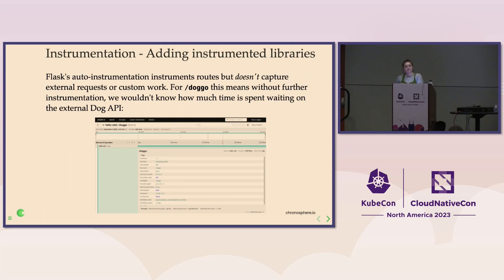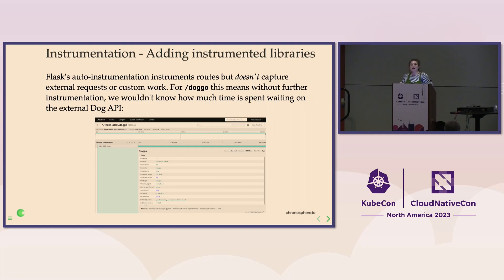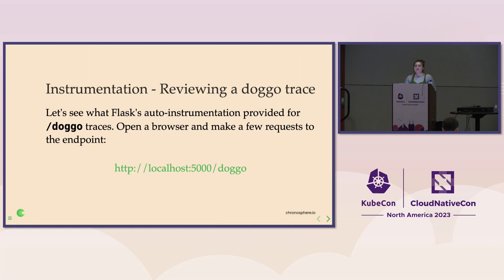Flask auto instrumentation was instrumenting at the route level, but it didn't capture external requests or custom work. Our Doggo endpoint calls out to the custom Dog API — we don't control that code, so we can't add instrumentation there. That means if we only have Flask programmatic instrumentation and we're looking at traces for Doggo, we don't really know how much time we spent calling out to the Doggo API versus spending internally processing. It would be super handy to know if it was a Doggo API problem or an internal problem if we needed to optimize this code path.